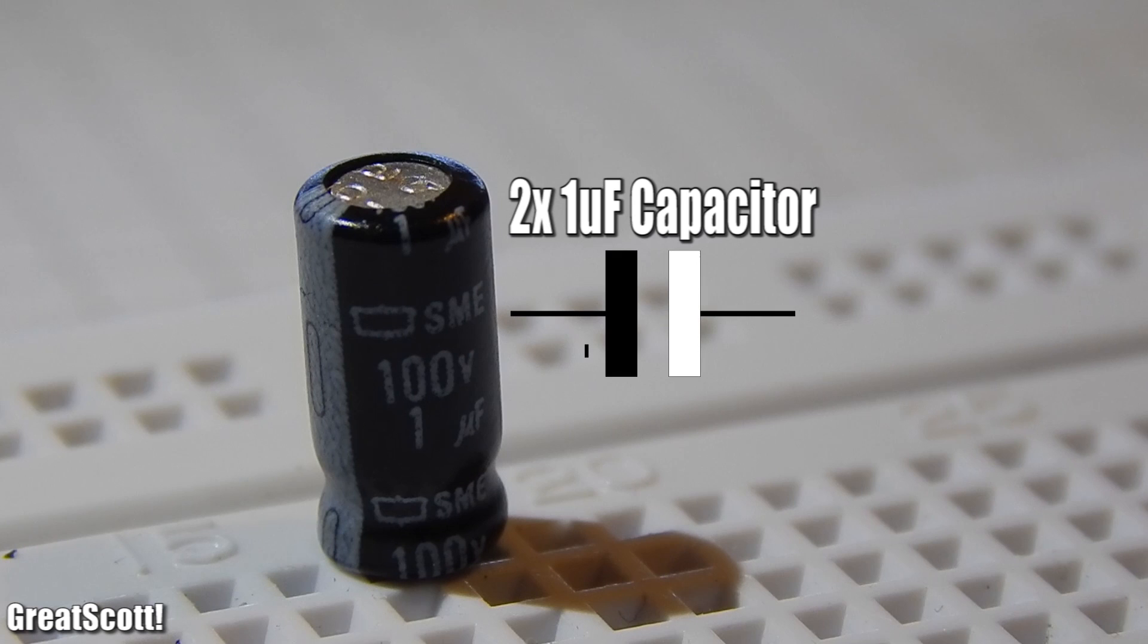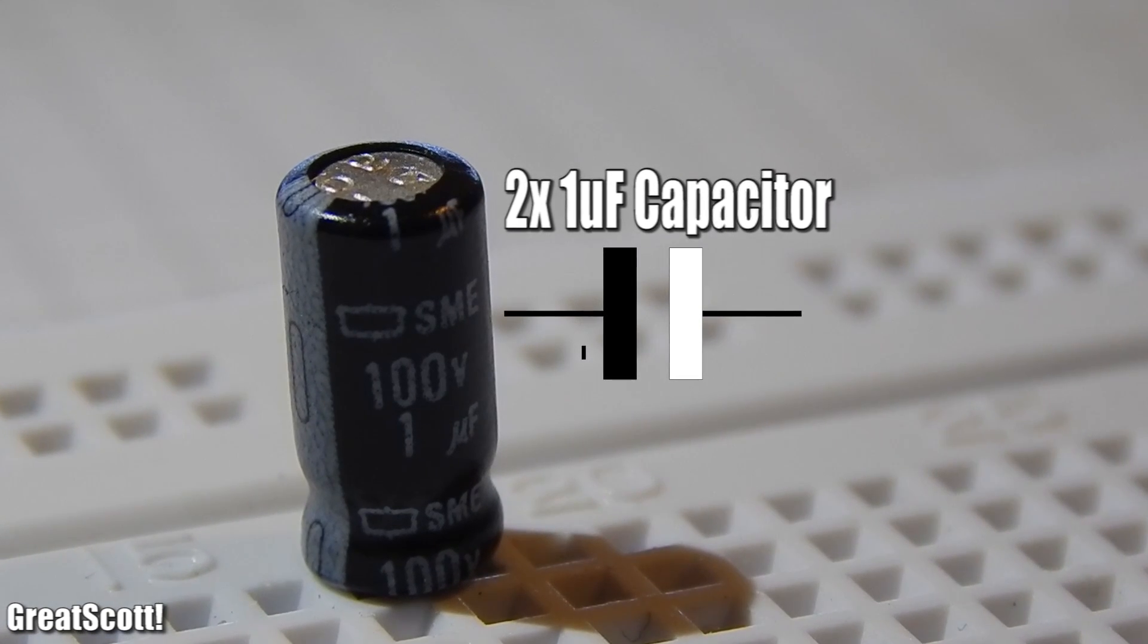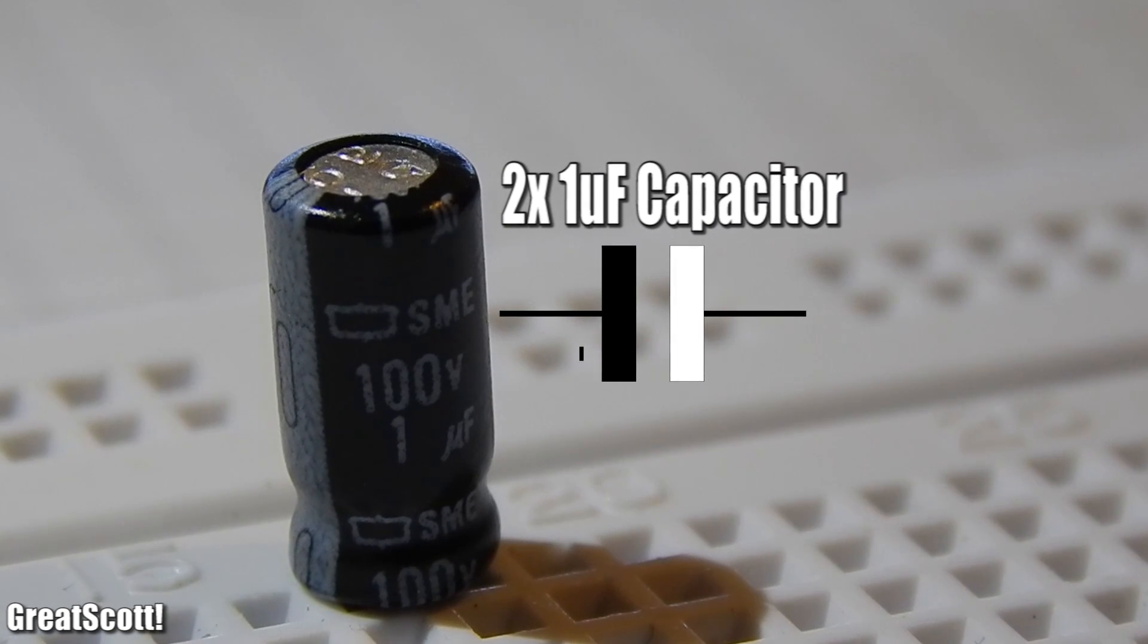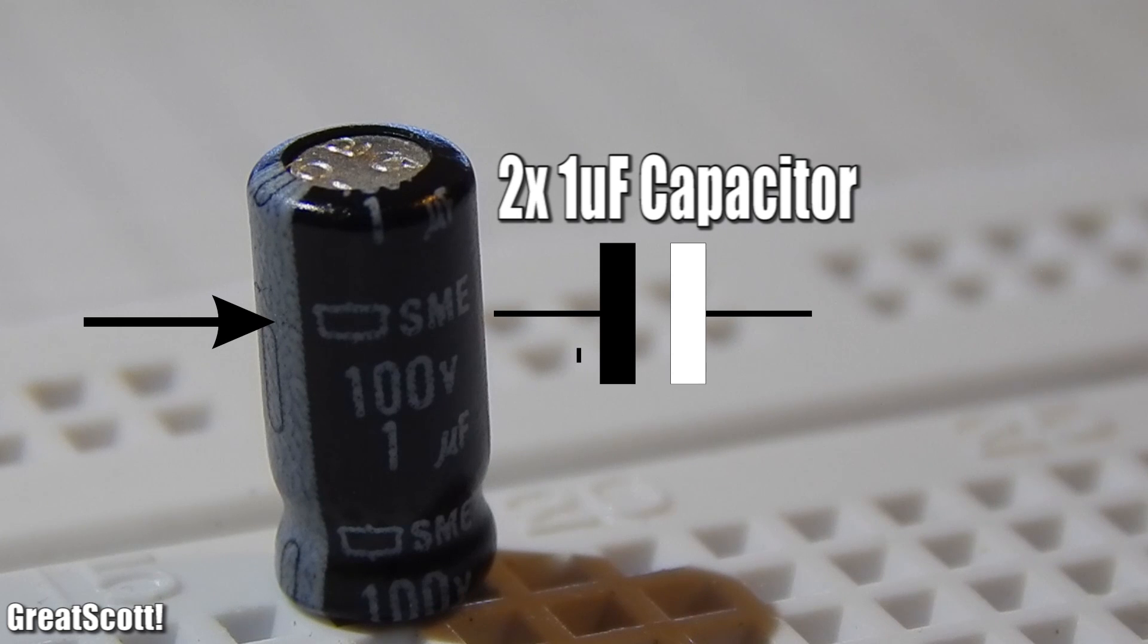But be careful, I used electrolytic capacitors, those are polarized components. That means it has a positive and a negative side. The negative side is always marked, in this case with a line, and the negative side goes obviously to ground.